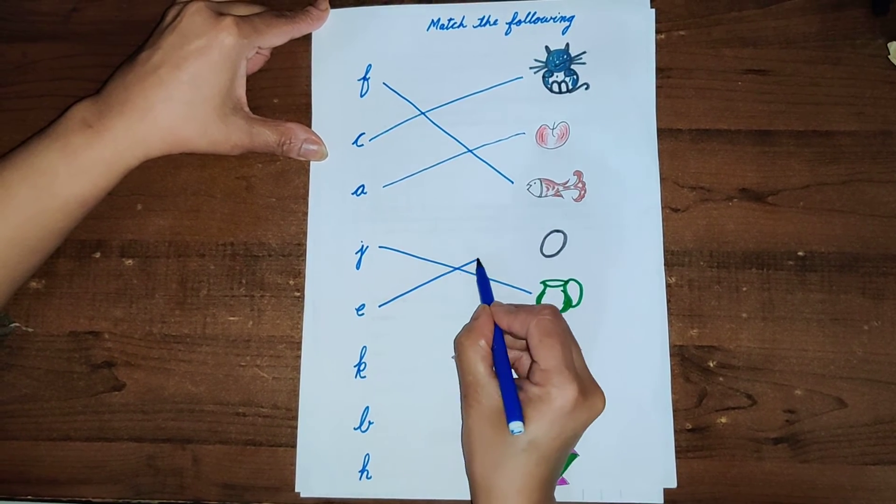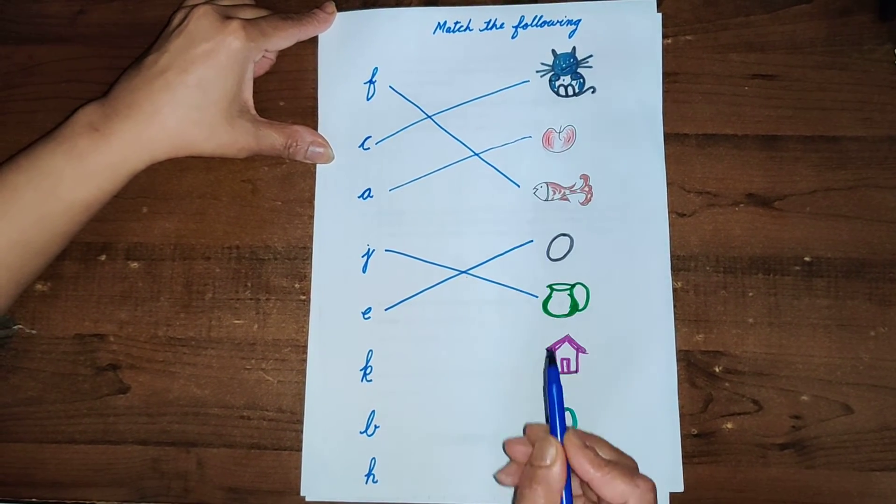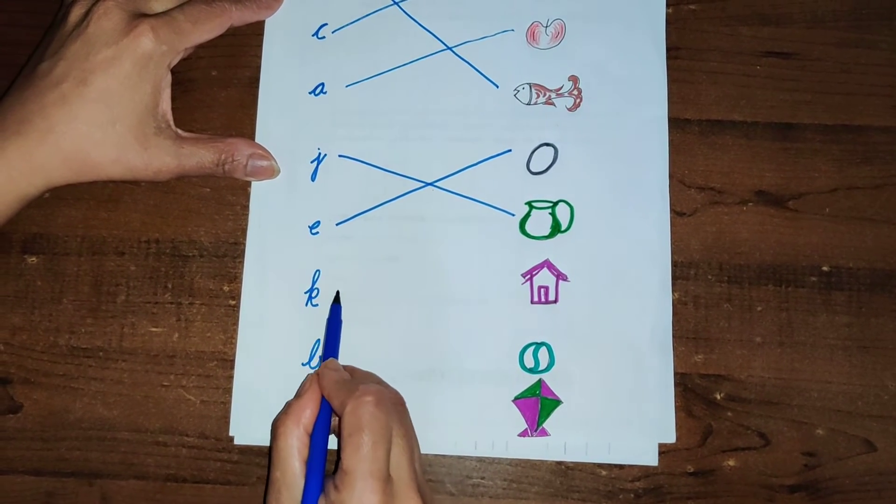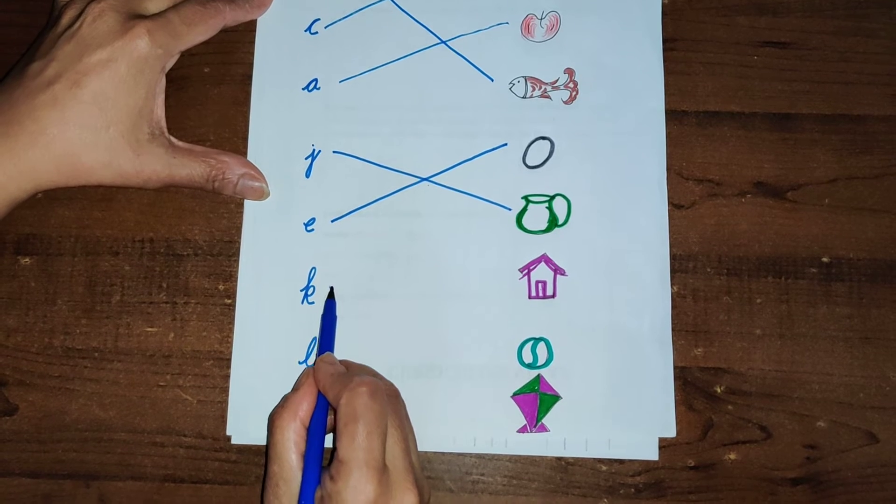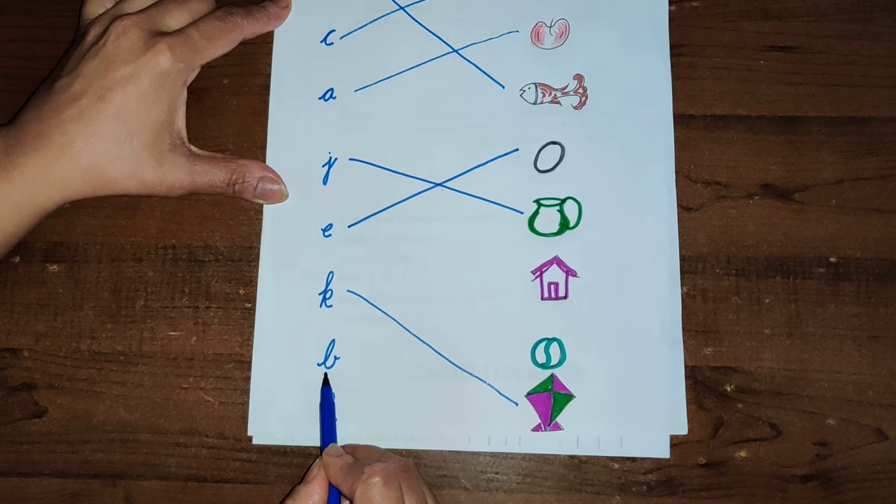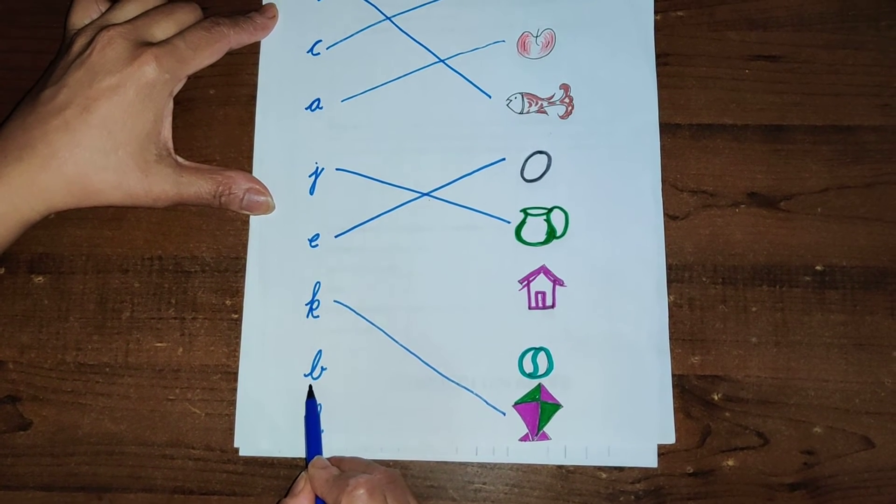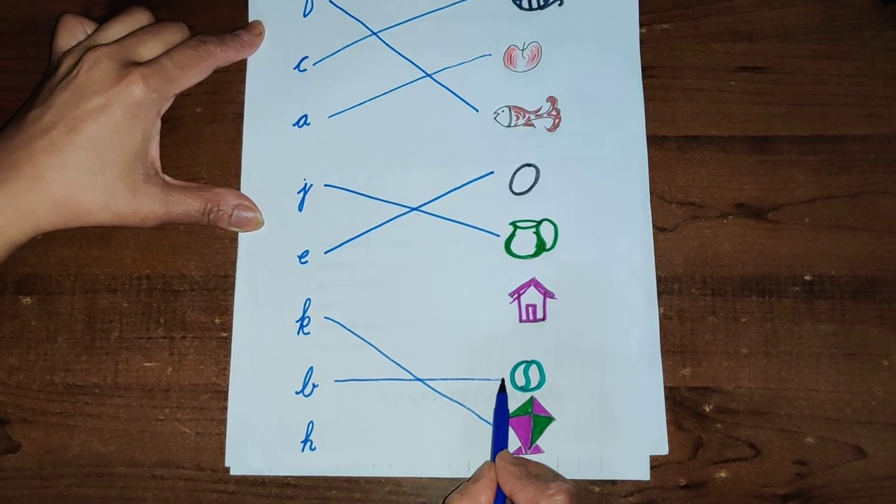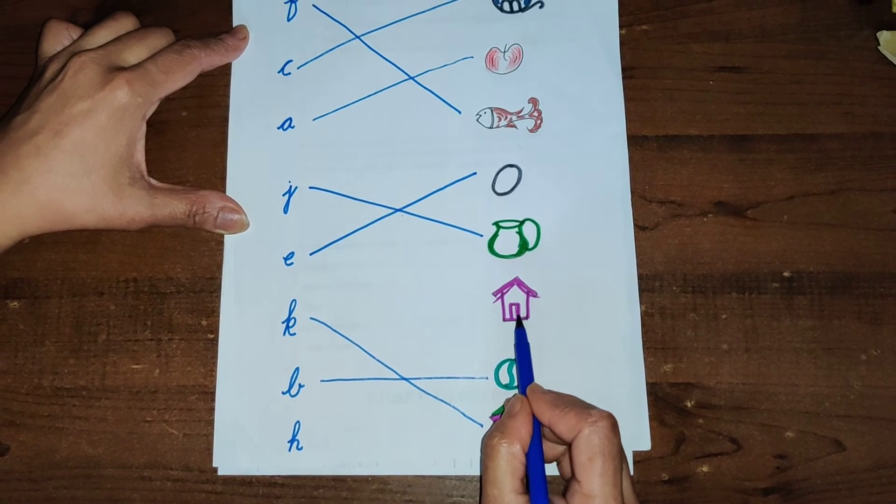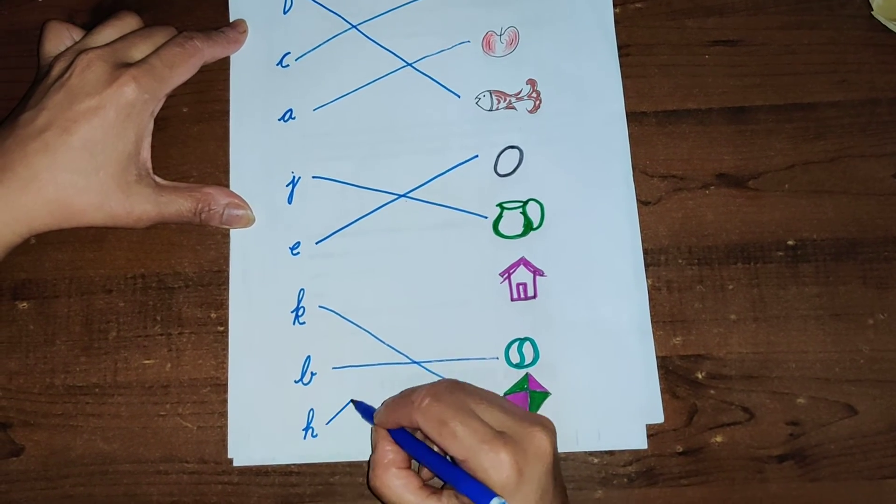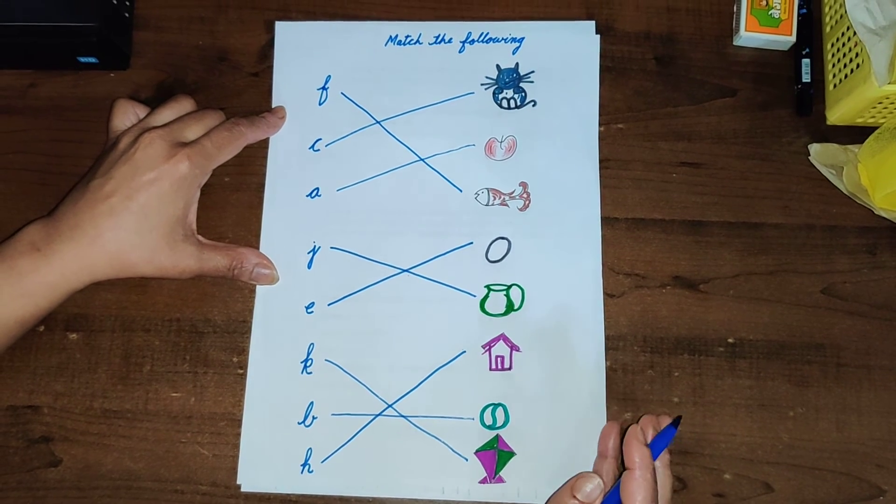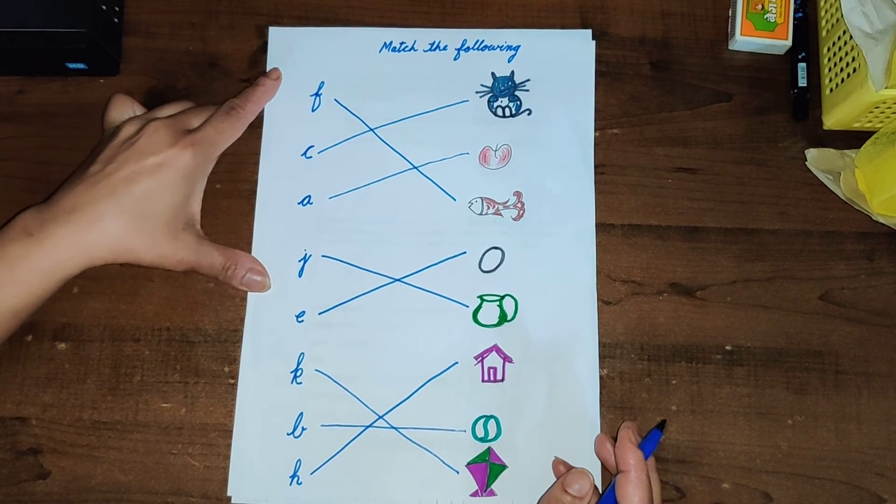Then K, K for, everybody likes this especially boys, K for kite. Good, what is this? B, B for ball. H, H for hut.